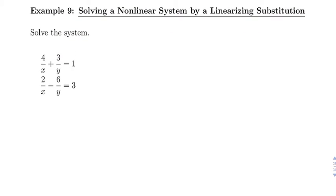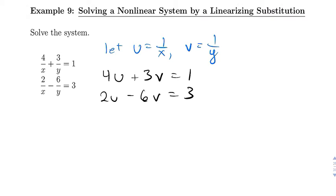So this one we want to solve the system using a linearizing substitution. What we're going to do is let u be 1 over x and v be 1 over y. So now what that means we're going to get 4u plus 3v equals 1, and 2u minus 6v equals 3.